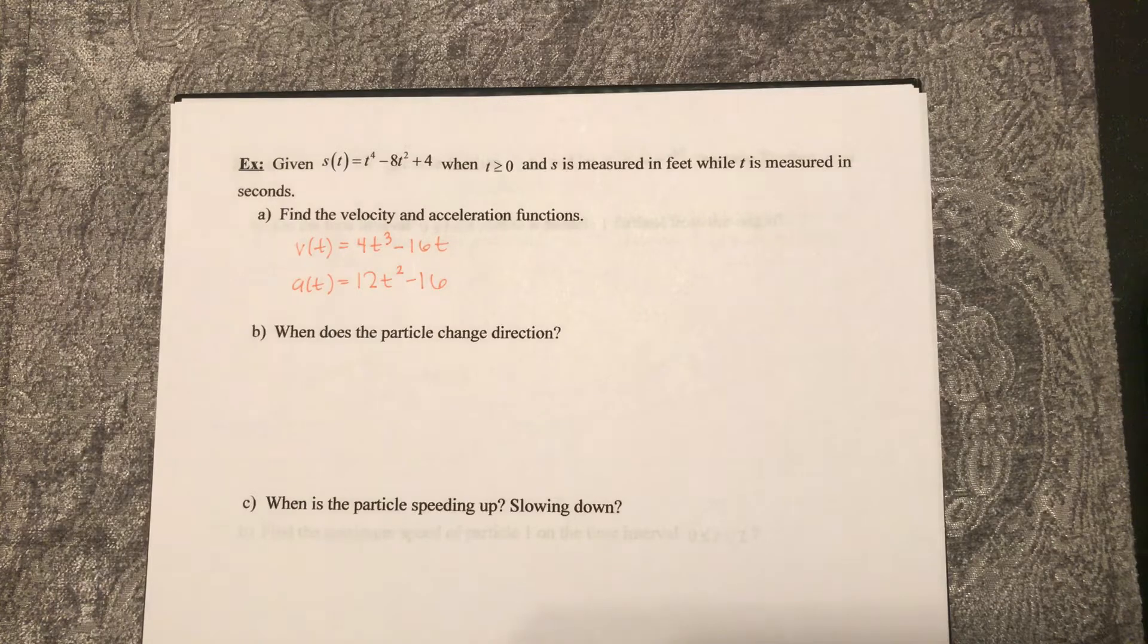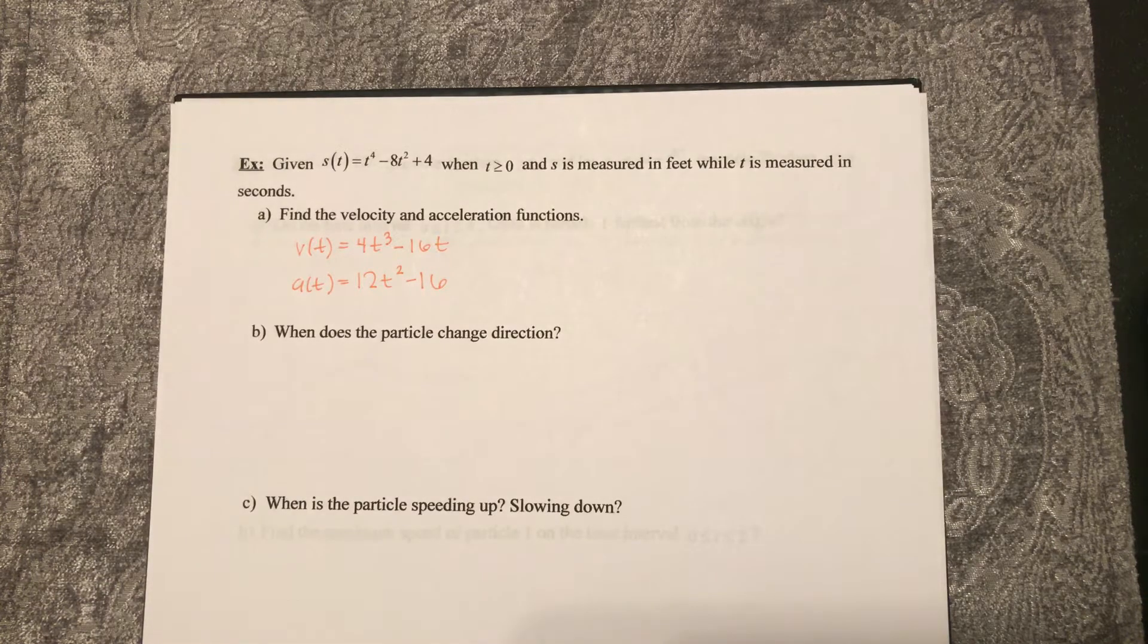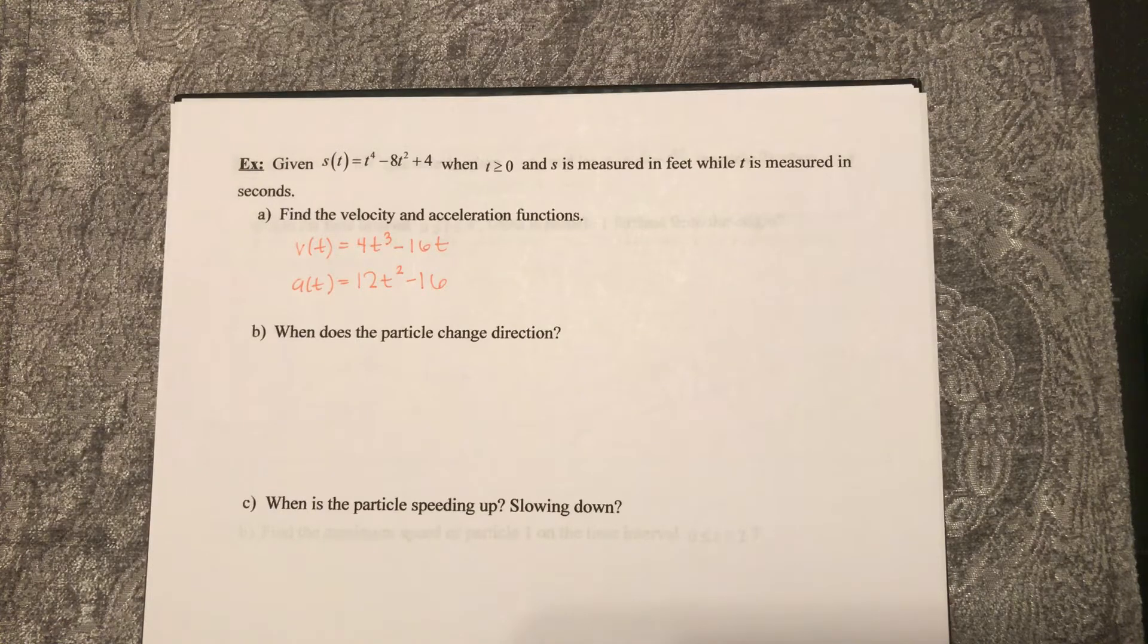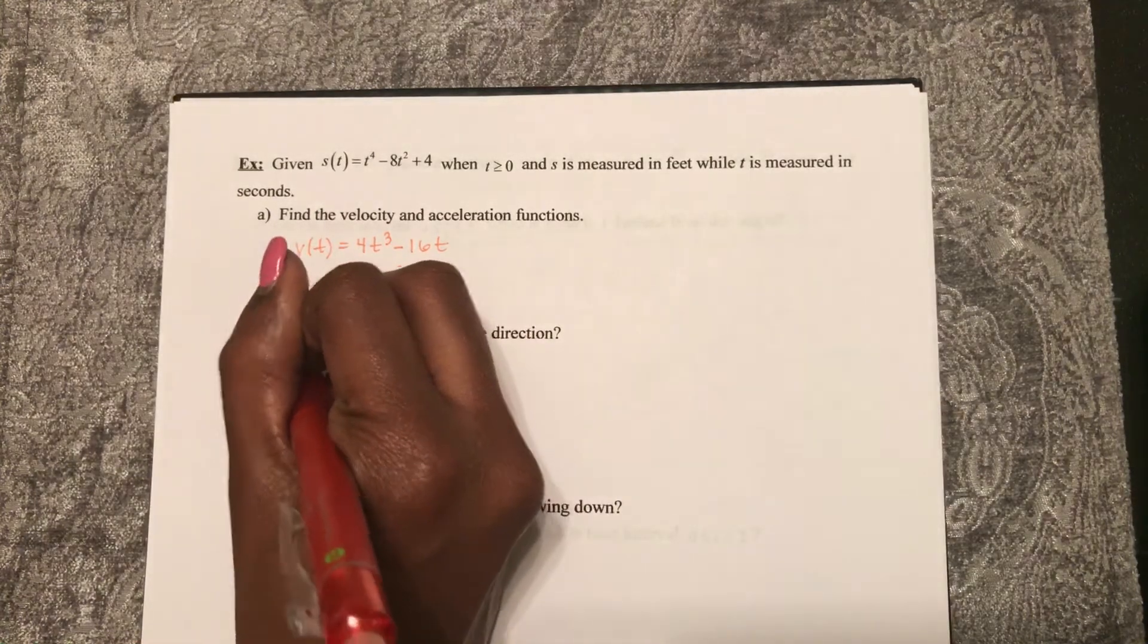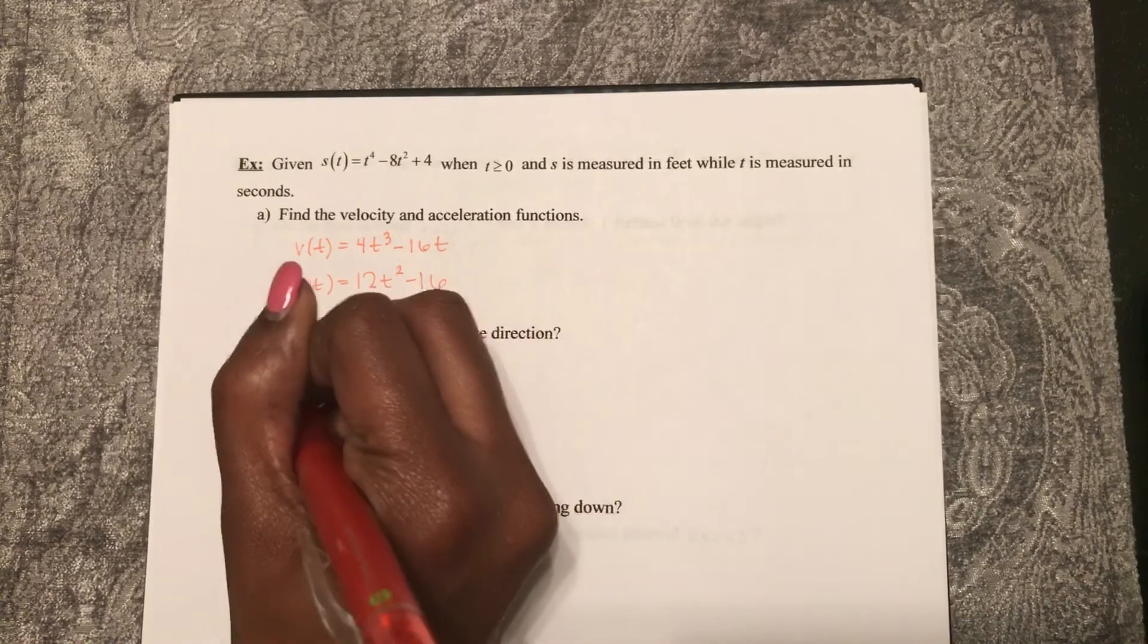So when does the particle change direction? Direction is determined by our velocity, our positive or negative direction. So let's see, when is v of t equal to 0?